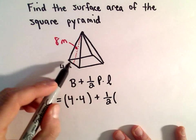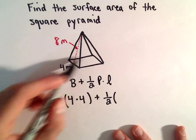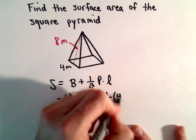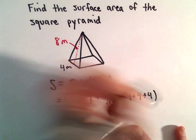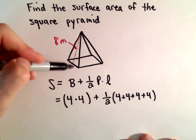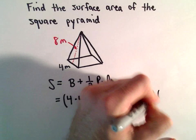Plus one-half of the perimeter, which is 4 plus 4 plus 4 plus 4. Then the slant height is simply equal to 8.